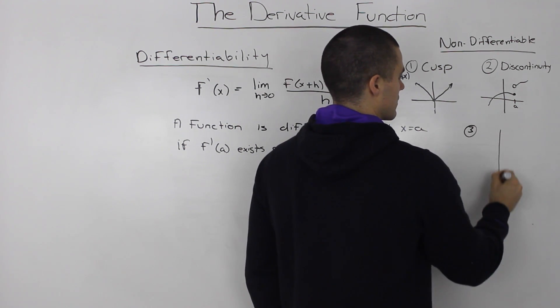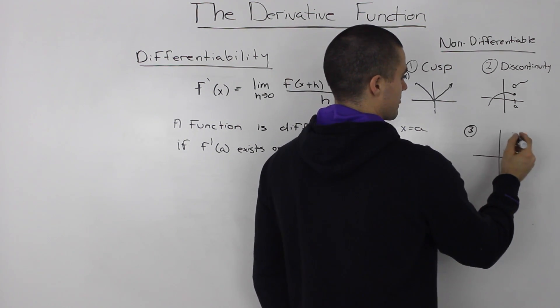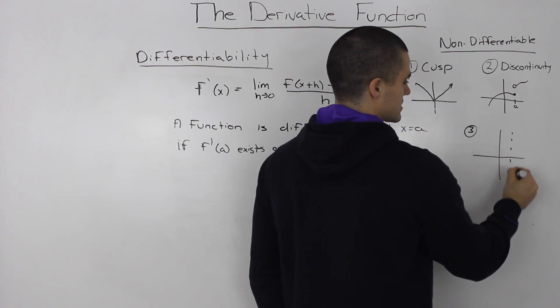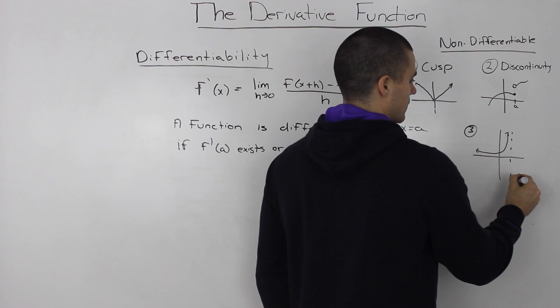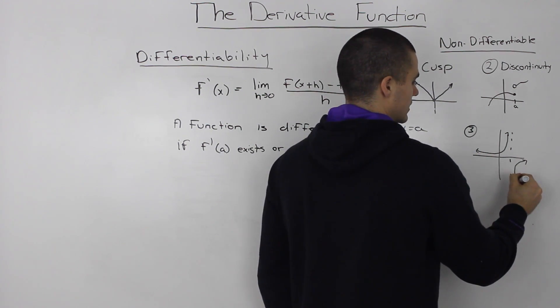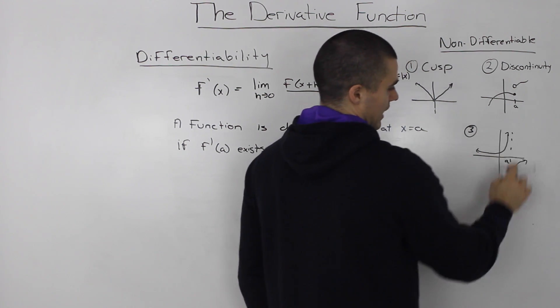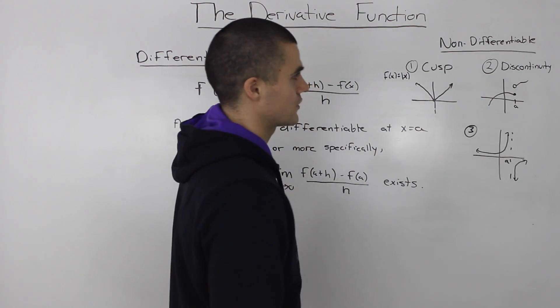Another way that a function is not differentiable is if there's an asymptote. So if you have a function like this, at this point a, this asymptote, it won't be differentiable.